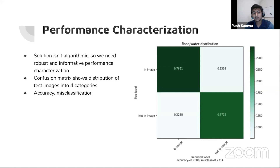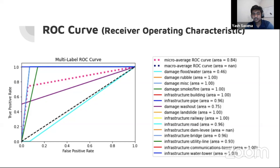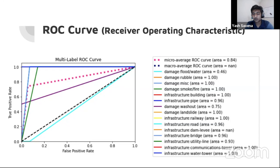The ROC (Receiver Operating Characteristics) curve shows the relationship between the true positive rate and the false positive rate for each of the 15 possible labels — including flood water, smoke/fire, buildings, etc. The black dotted line represents the performance of simply guessing, and the dotted pink line represents the micro-average ROC curve, or average performance. Curves generally closer to the top left corner are better. Most of the curves are relatively close to the top corner, except for one, so there is definitely some room for improvement.